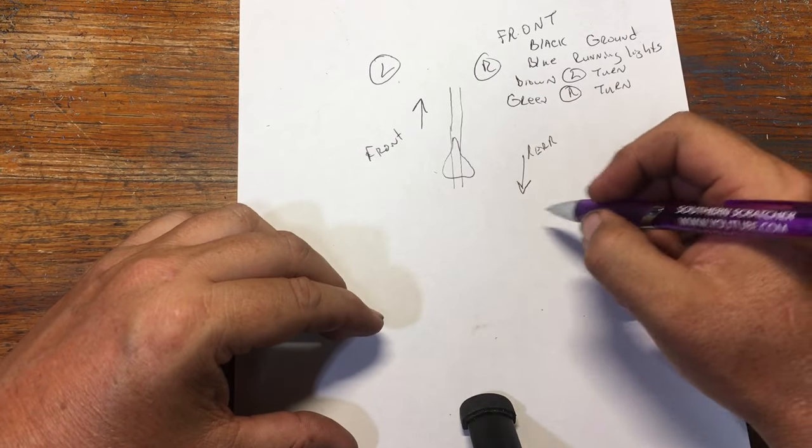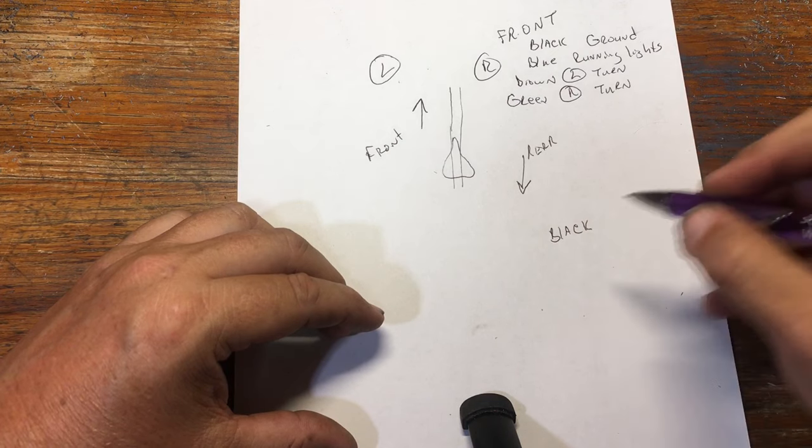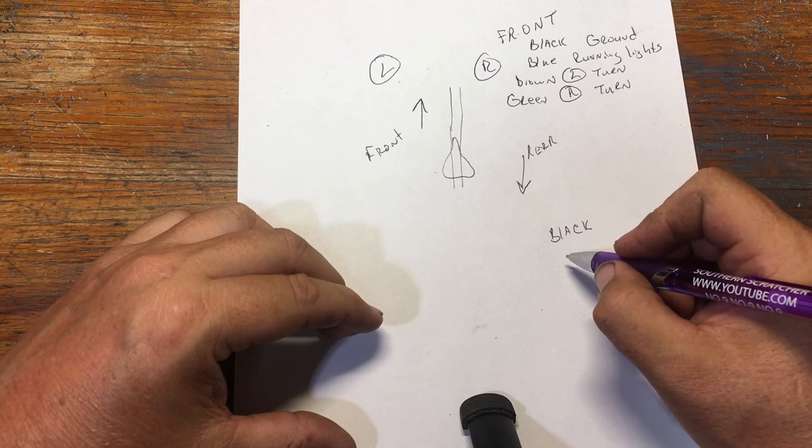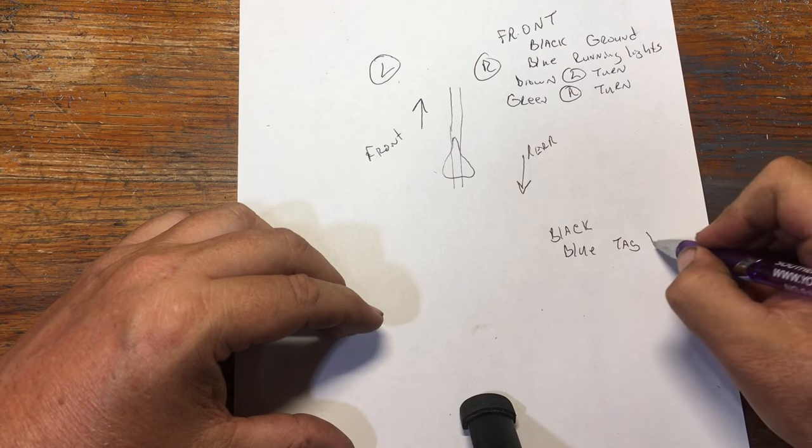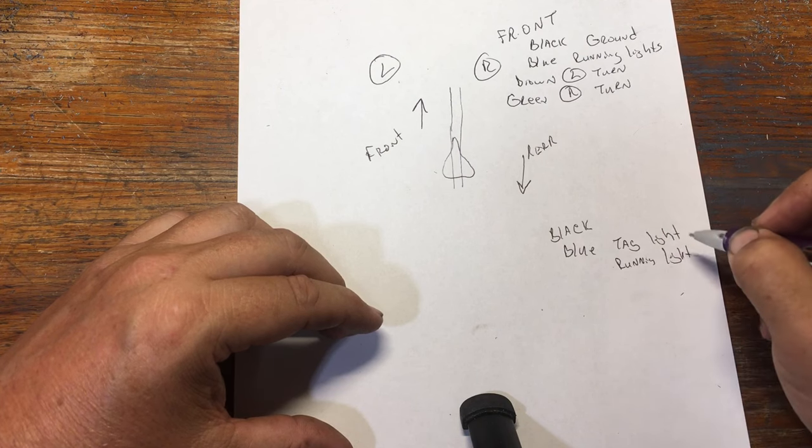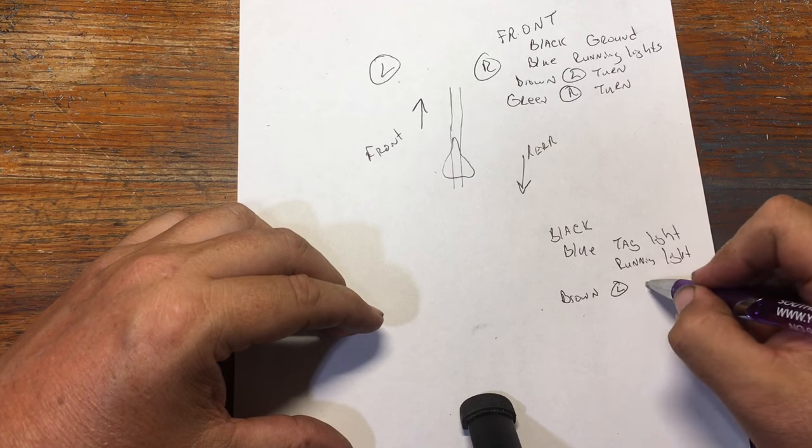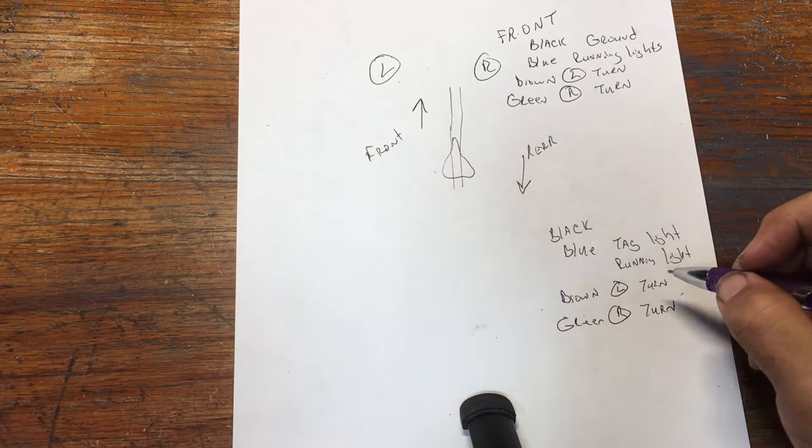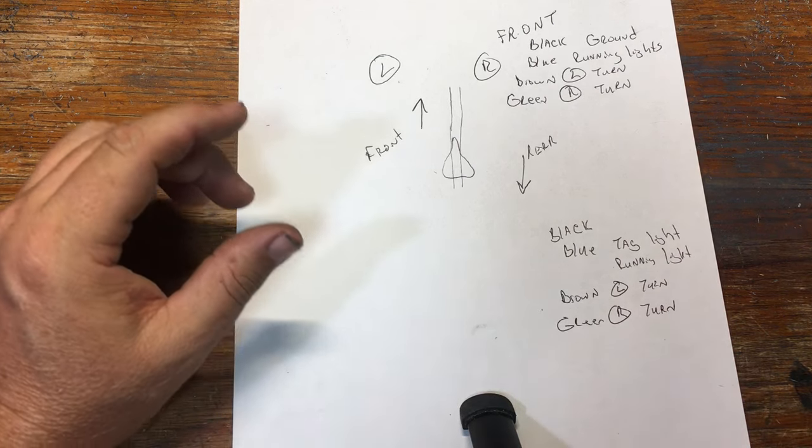On the back, what you're going to have is the turn signals. You're going to have black, and you're going to have another color, it could be blue to the back, and that's going to be your tag light and running light. And then of course you're going to have your brown to the rear, and that's going to be your left turn. And green is going to be your right turn. Again, these colors could be different when you start working on different bikes.